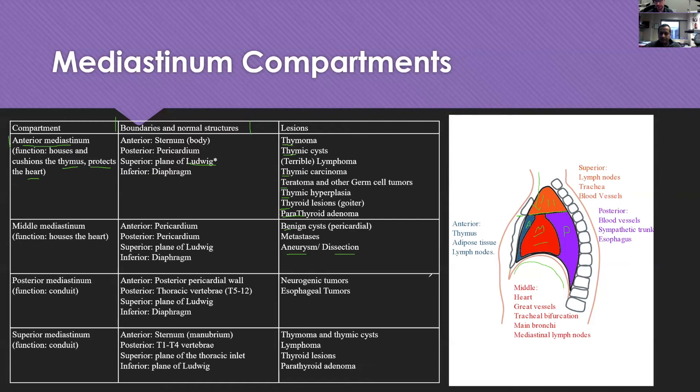The posterior mediastinum is where we have a lot of our nerve structures, so you can get all these neurogenic tumors including schwannomas. The esophagus is actually in this space as well, so remember that you can get esophageal malignancies arising in the space. Last but not least, the superior mediastinum, which is on top, you can get many of the similar things as the anterior, so you can get thymomas and thymic cysts, lymphomas, and often thyroid lesions and parathyroid adenomas.